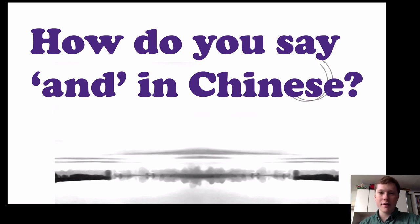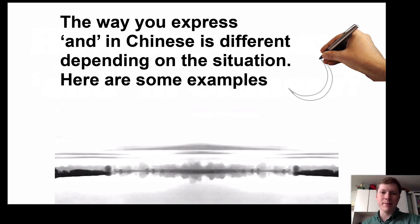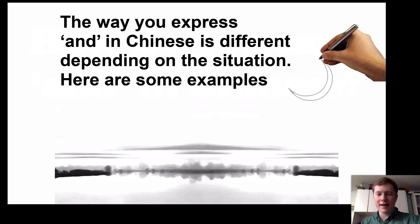Hi everybody, this is Chris again for another Chinese learning video. In this video I want to talk about how you say 'and' in Chinese, because this is a mistake that a lot of people make. In European languages there's normally just one single word for 'and', but in Chinese there are different words depending on the situation, and I want to explain this so you don't trip up on it.